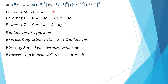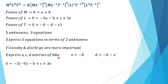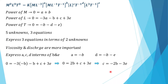From the first equation, a = −b. From the third equation, d = −b − e. Substituting a = −b into the second equation: 0 = −3(−b) − b + c + 3, which simplifies to c = −2b − 3. So we have expressed a, c, and d all in terms of b and e.